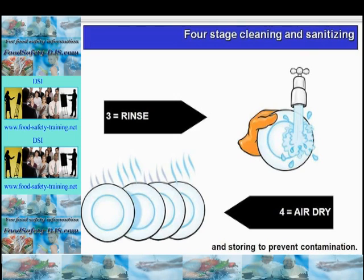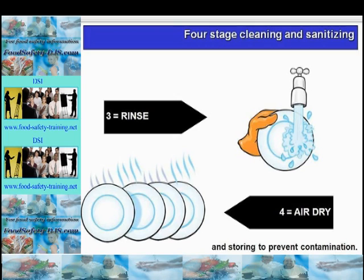Other washing methods include the two-sink method, which is similar to the six- and four-stage methods. Starting with a pre-clean, then a main clean in hot water between 45 and 55°C, an intermediate rinse, disinfection at around 65°C — for example hot water at 82°C for 30 seconds — followed by a final rinse if a chemical disinfectant is used instead of hot water, and finally air drying and inverted storage.